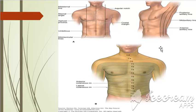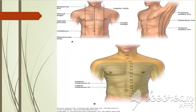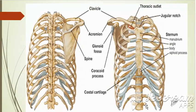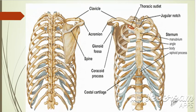Then comes the scapular line. As seen in this diagram, the scapular line passes vertically along the inferior angle of the scapula. Through this inferior angle of the scapula, a vertical line passes, and that line is known as the scapular line. These are the surface landmarks of thorax.